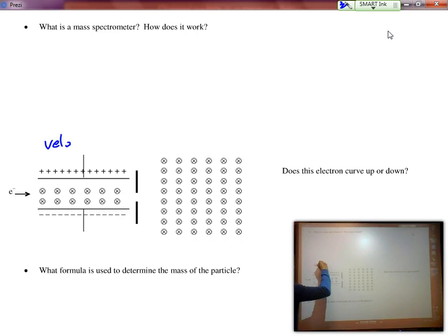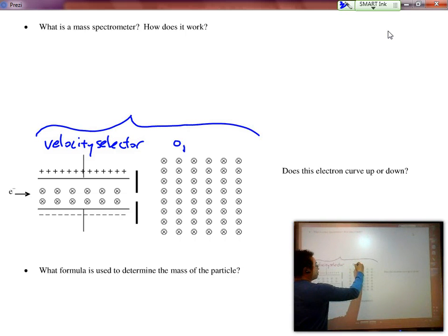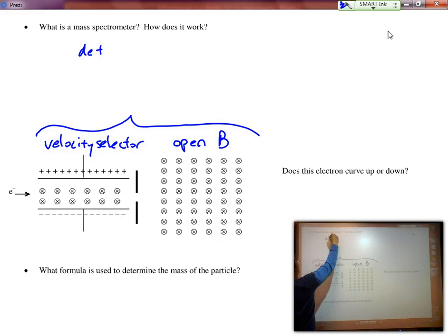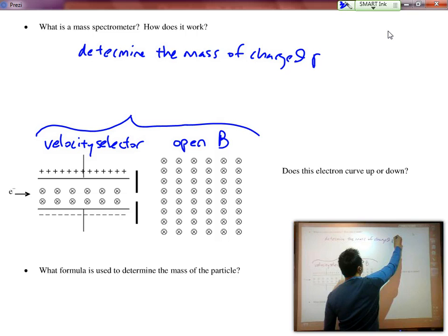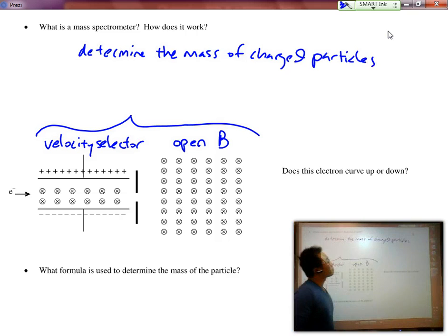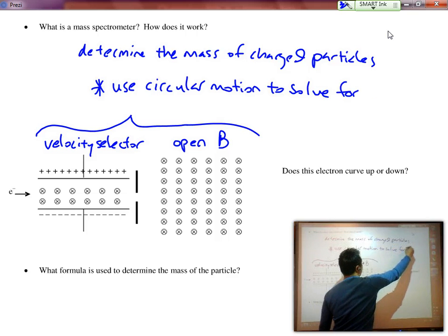Over here, we still have the velocity selector. But mass spectrometer deals ultimately with the entire part. And the second part is just an open magnetic field. There's no more electric field. And the purpose of the mass spectrometer is to determine the mass of charged particles. So in this case, over here, is going to use circular motion to solve for M.